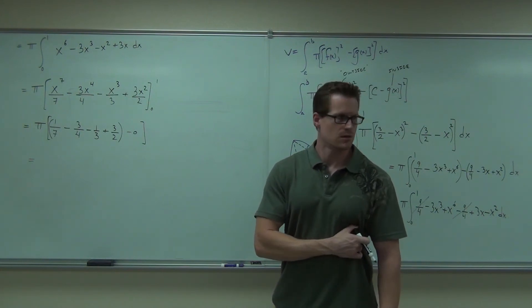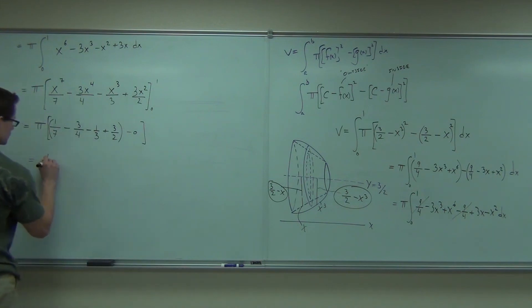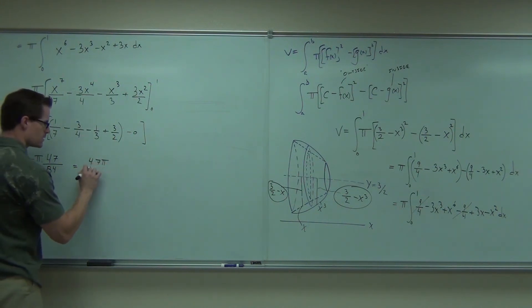Okay. And 47/84ths. Okay. You're not doing it wrong. Pi times 47/84ths is 47 pi over 84.